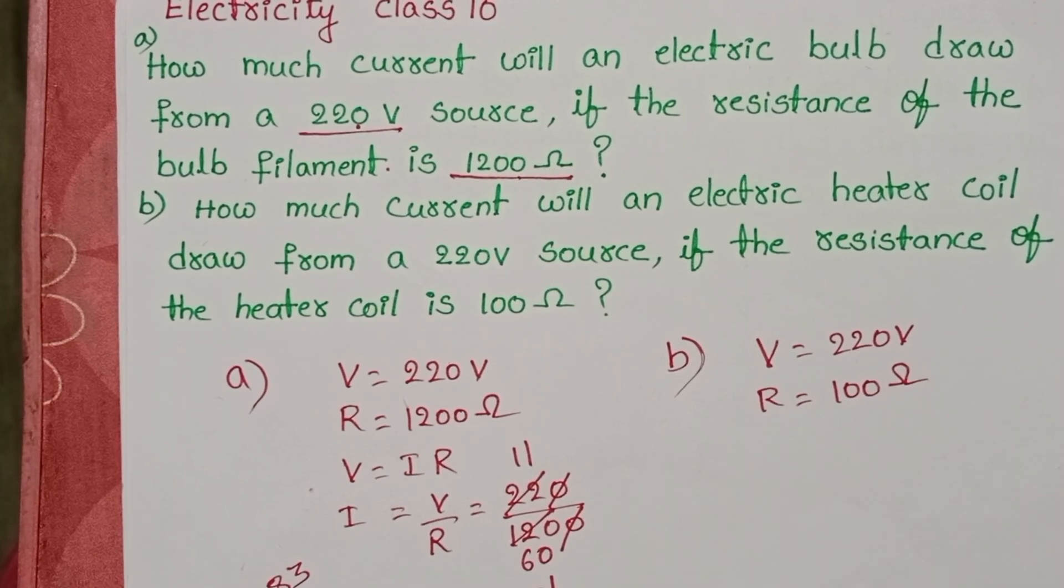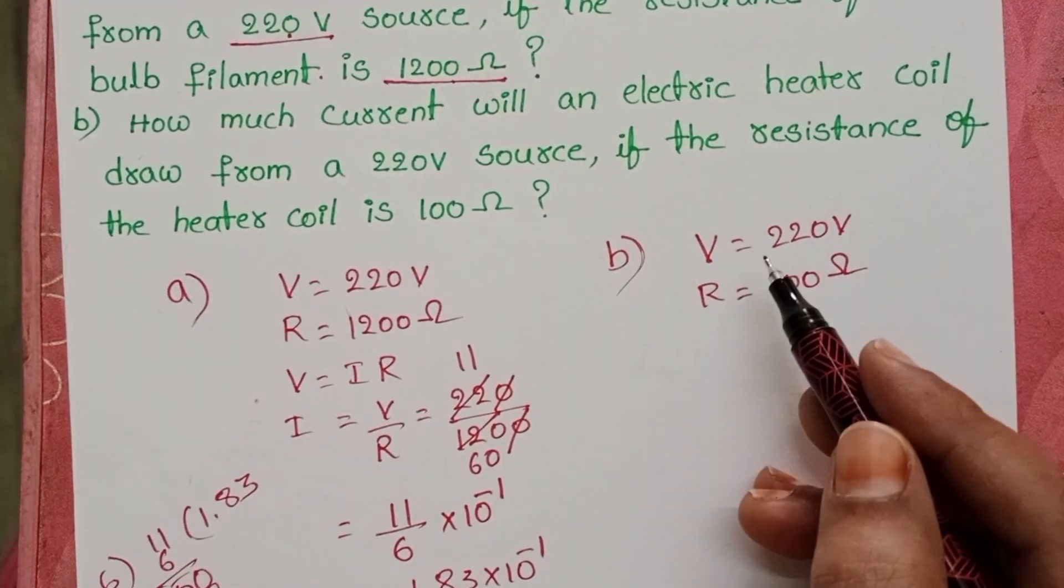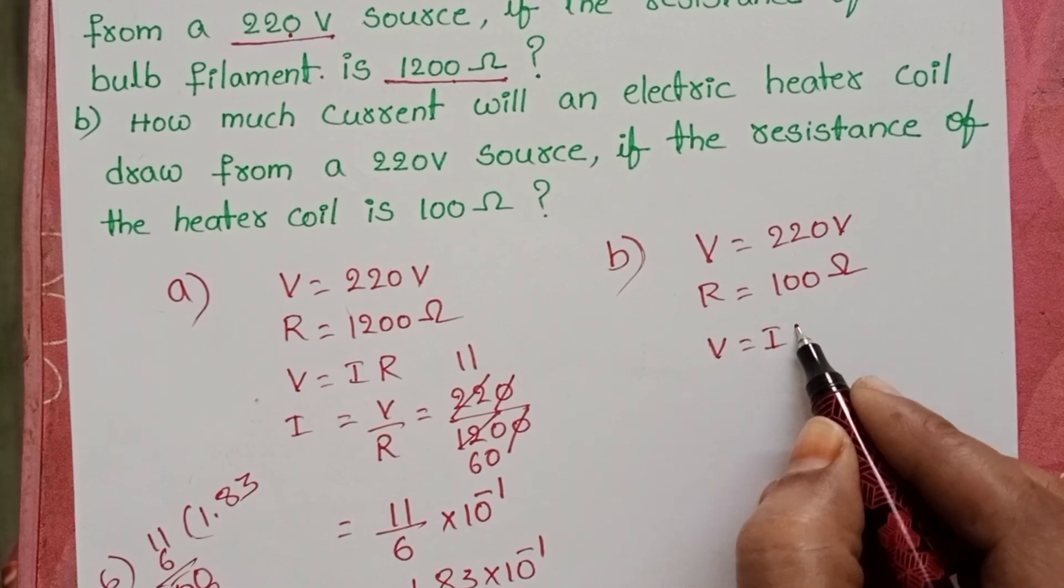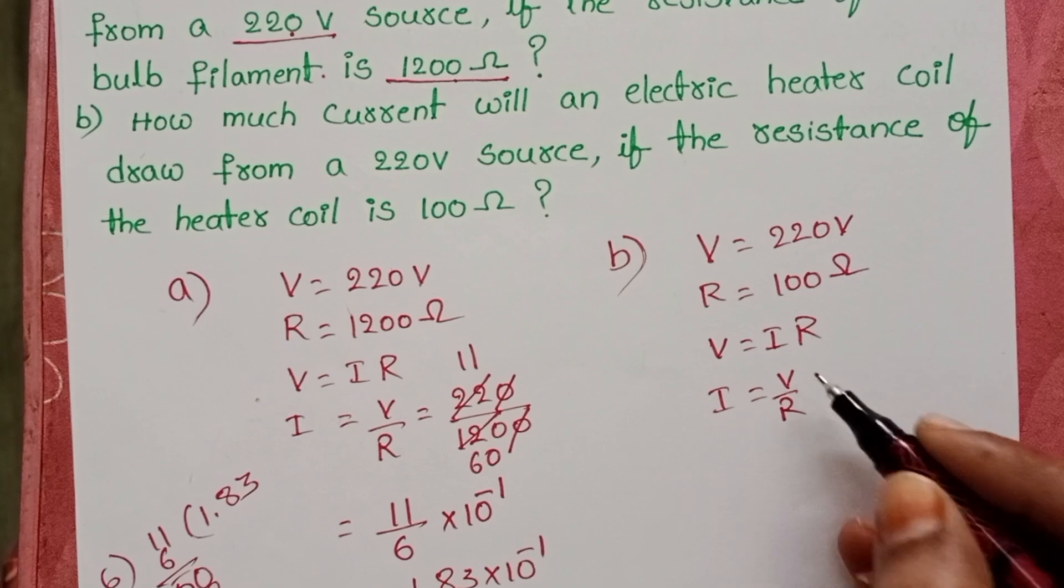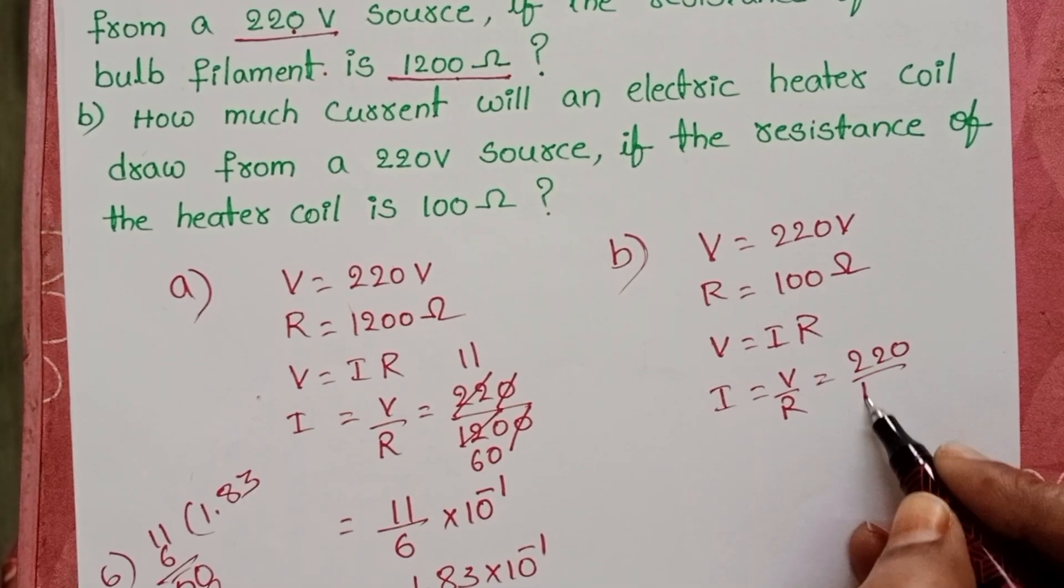Here also we have to find out the electric current passing through the heater. Take again Ohm's law: V equals IR. I equals V by R. 220 by 100.